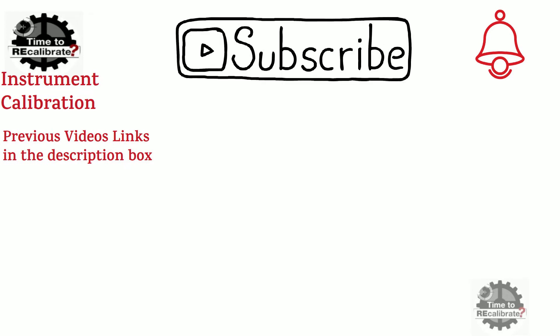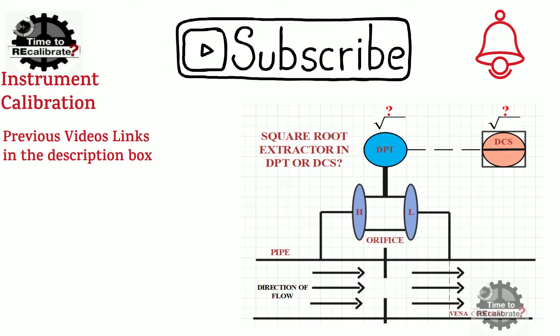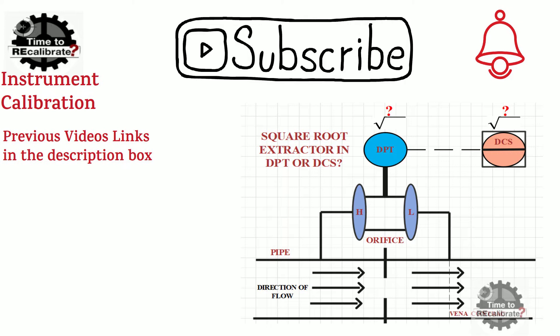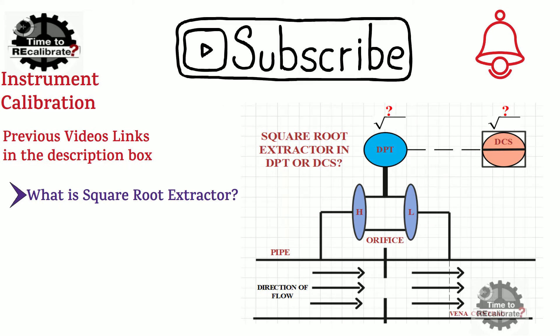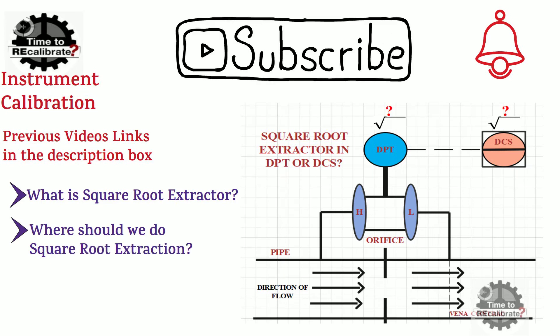In recent time, I have got many questions about square root extractor and where should we use square root extractor. So I have decided to make one video to cover this topic. In this video, I'm going to explain what is square root extractor and where should we do square root extraction, at DPT side or at DCS side?